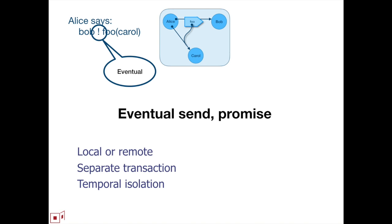If Alice doesn't want to give Bob full access to Carol, she creates an attenuator — an intermediate object that frontends Carol, prevents part of Carol's authority, acts like Carol typically but in an attenuated way — and passes Bob access to the attenuator instead. The classic example is a revocable forwarder that forwards all messages to Carol until Alice tells it to stop, at which point it stops completely. You can attenuate in all sorts of different aspects of authority.